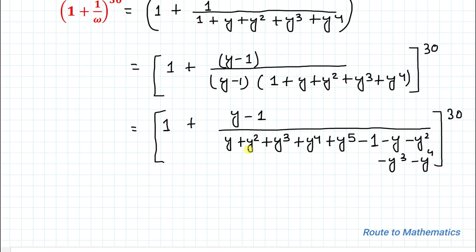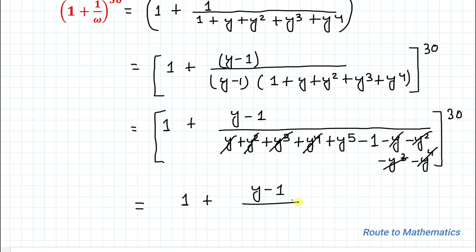We can see there are similar terms in the denominator with negative signs that cancel out. The y and negative y cancel, y² and negative y² cancel, y³ and negative y³ cancel, y⁴ and negative y⁴ cancel. So we are left with 1 plus (y⁵ minus 1) divided by (y⁵ minus 1), to the power 30.